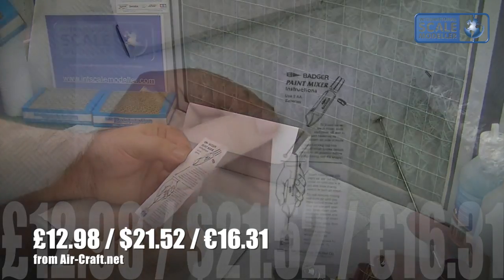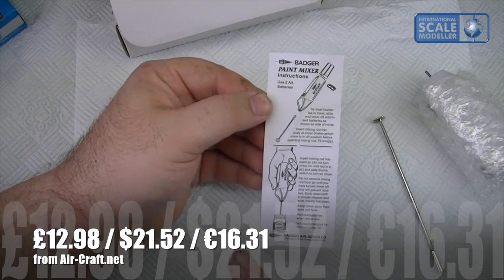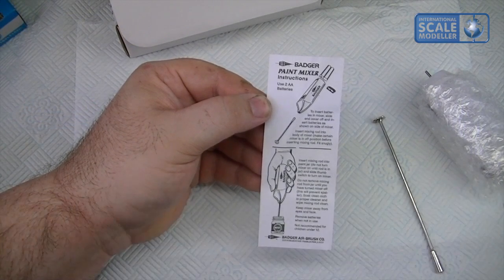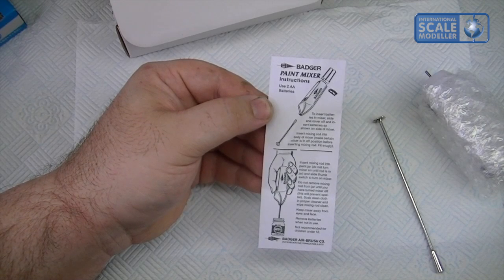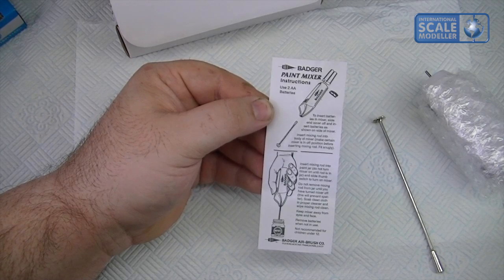So we'll quickly go through the instructions. Two AA batteries which ironically I very handily have right next to me. To insert batteries in mixer, slide the cover off and insert the batteries as shown on the side of the mixer. Insert mixing rod into the body of the mixer.